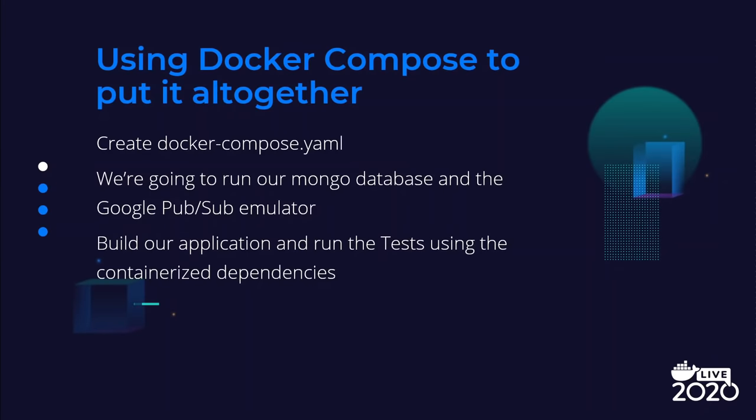Now we're going to use Docker Compose, which is going to take all three of those and put it together and make it run. We're going to create a Docker Compose YAML file for this and it's going to run our Mongo database, our Google PubSub emulator, and also build and run our tests using those containerized dependencies and the seed data we put in our Mongo database.